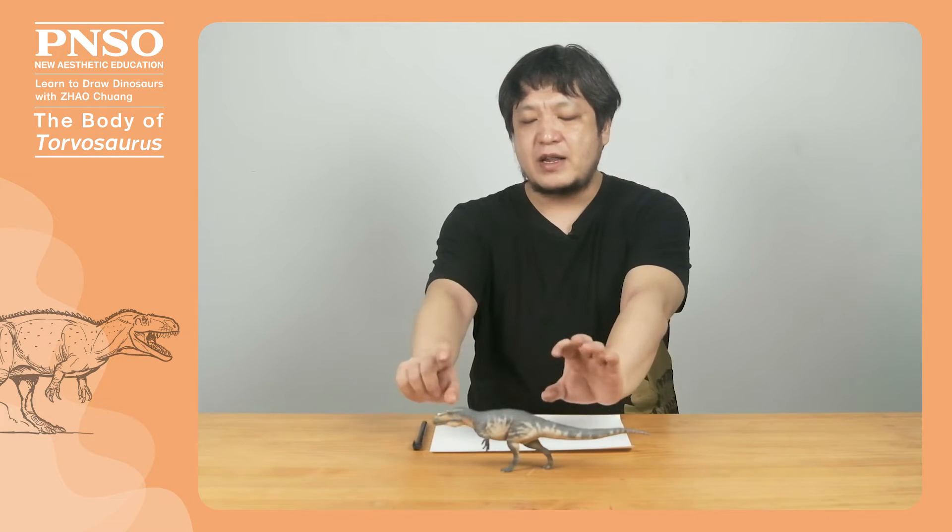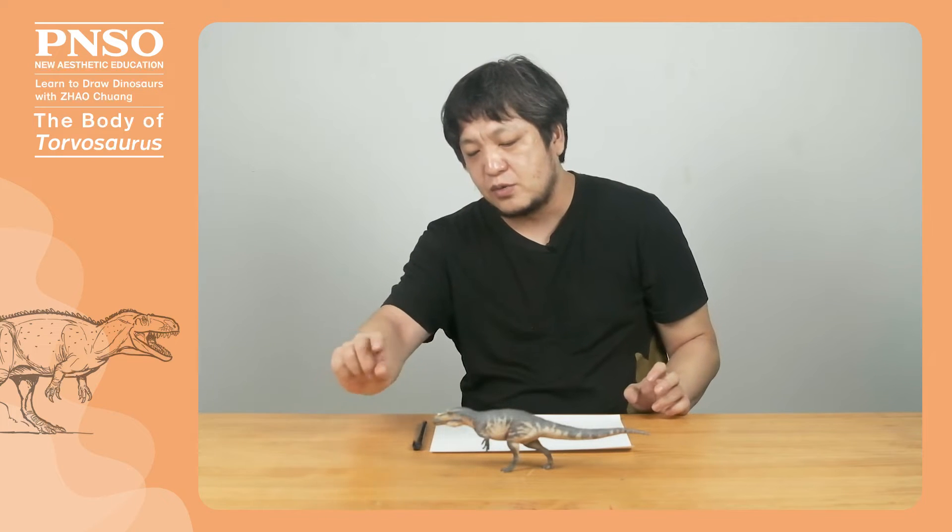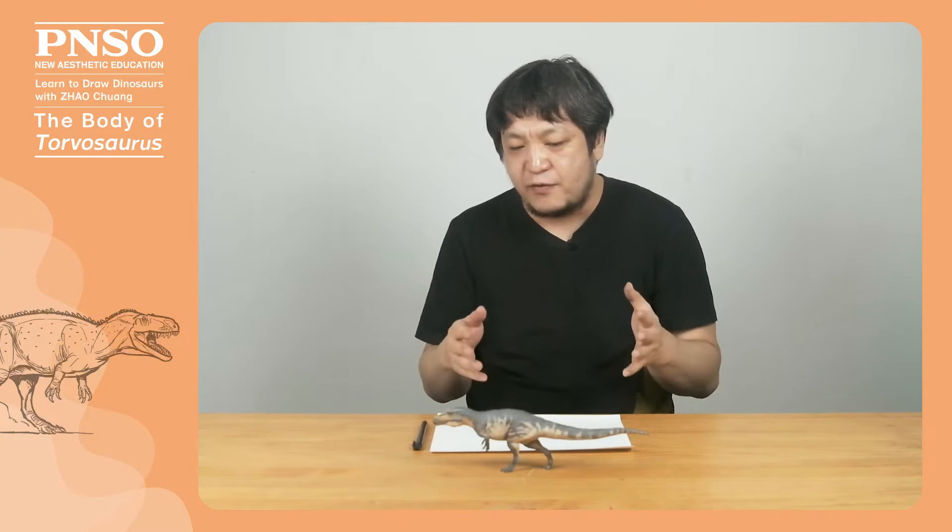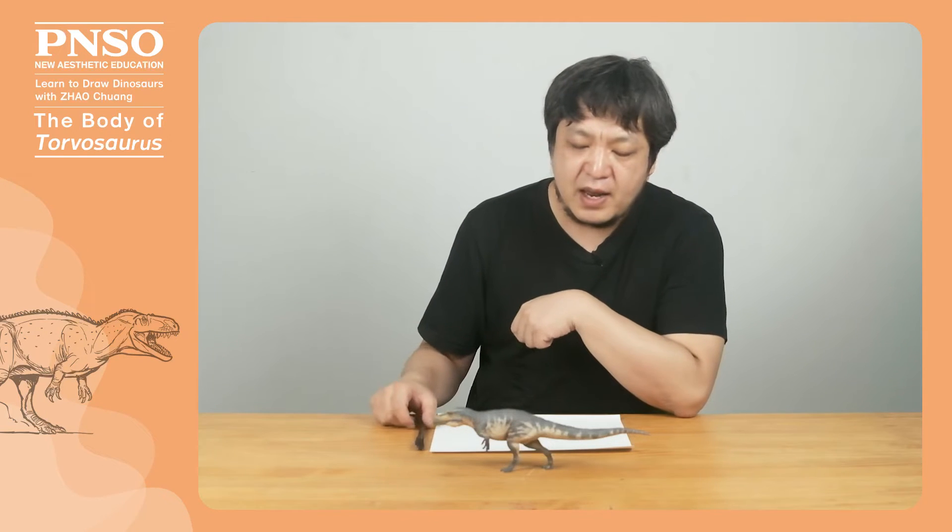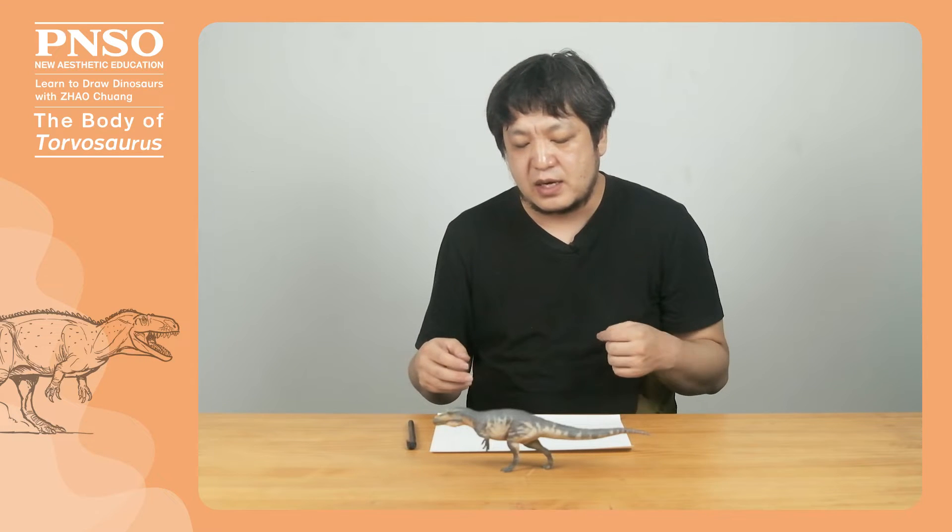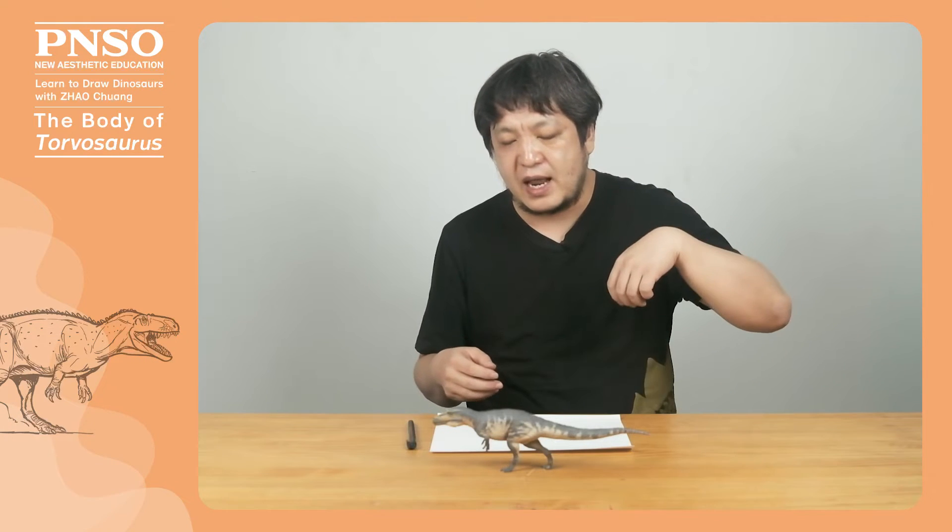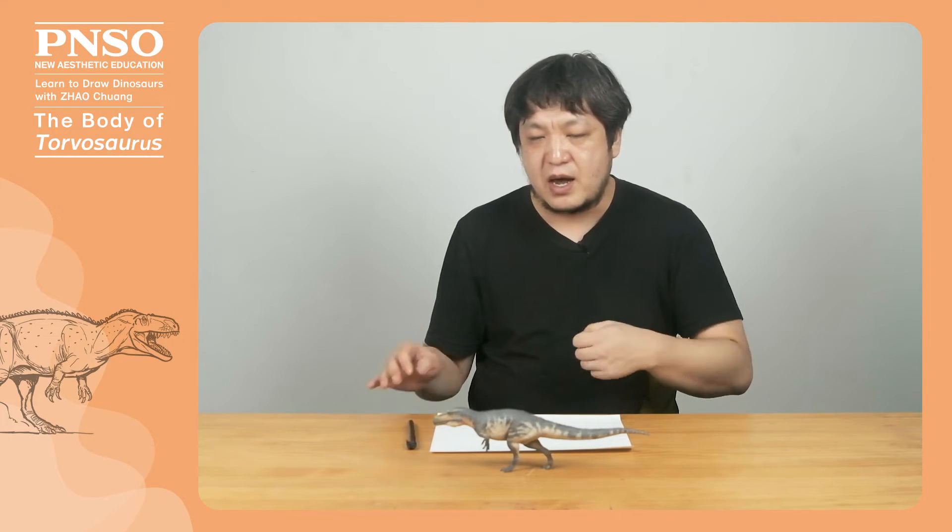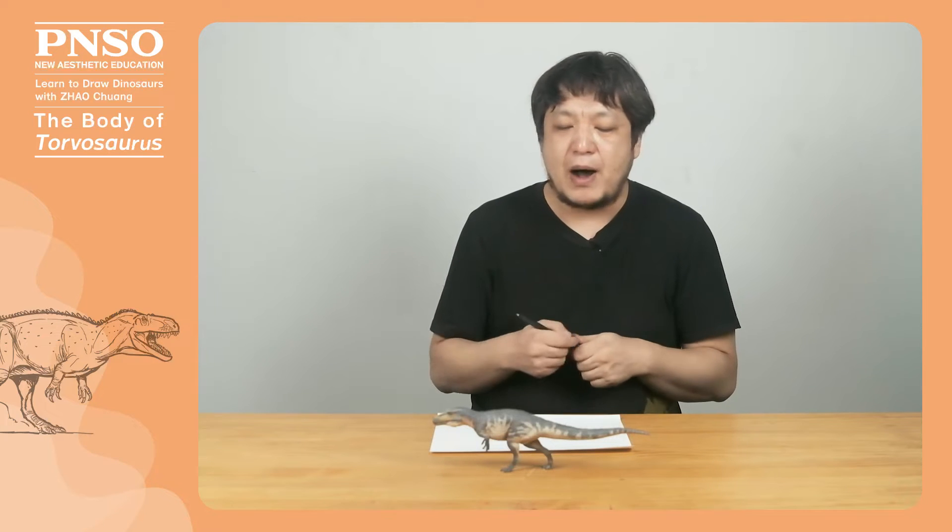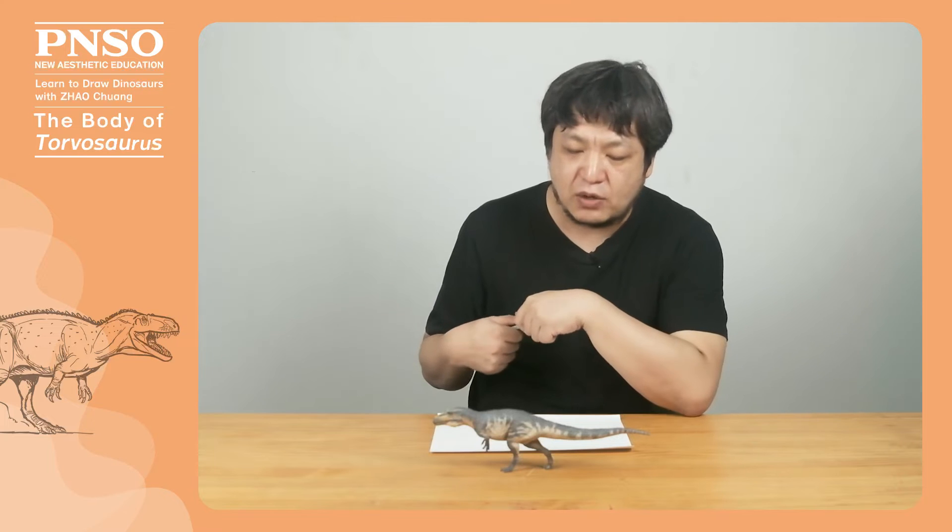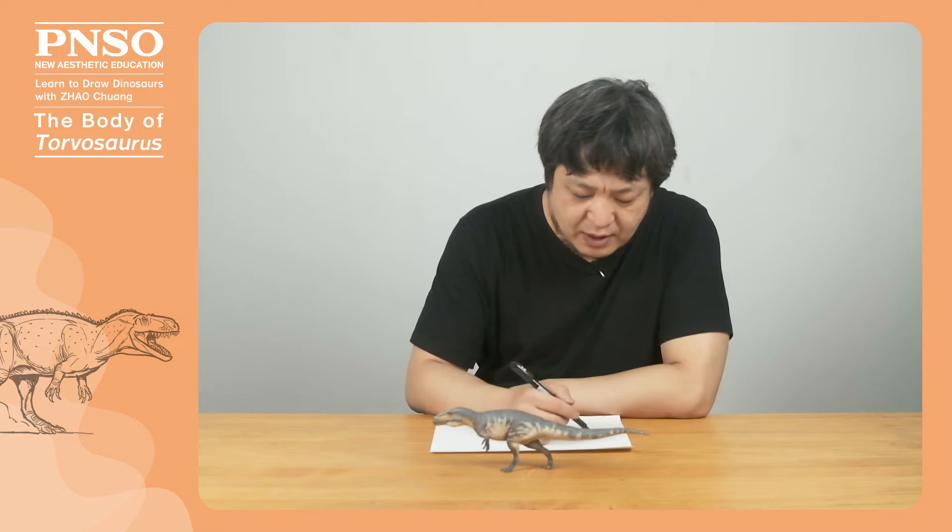The front half of its body looked more square, and its head was long. When drawing, we need to reflect its long and square body shape. In addition, we want to draw a Torvosaurus walking forward. So one of its legs was probably off the ground, and the other was touching the ground. As it walked, the two legs would alternate. When drawing, pay attention to the changes in the muscles, and how different body parts moved as it walked. Now, let's draw the body of the Torvosaurus.